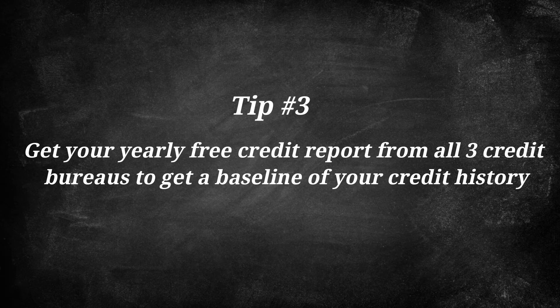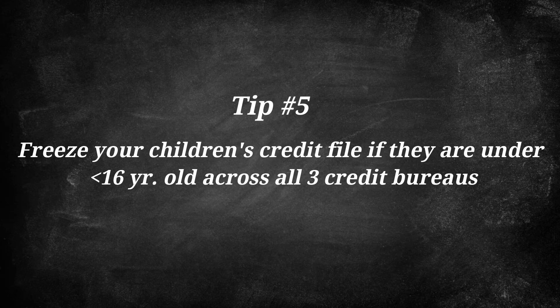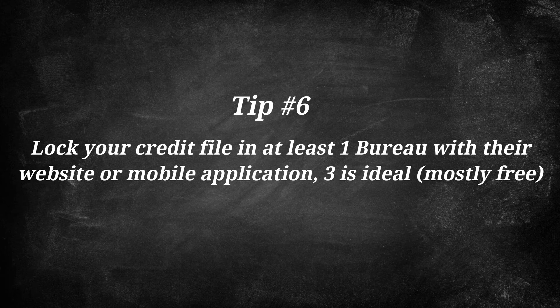Tip three: get your yearly free credit report from all three credit bureaus to get a baseline on your credit history. Tip four: leverage free dark web scans of emails, SSNs, and phone numbers that are available from several vendors. Tip five: if you do have kids, freeze your child's credit file if they're under the age of 16 across all three credit bureaus. Tip six: lock your credit file in at least one bureau with online services — three is ideal and they are mostly free, but unfortunately they're not coordinated. You can't just do it with one bureau and expect your credit file to be locked across all three, so I recommend doing it on all three, or at least one to help mitigate.